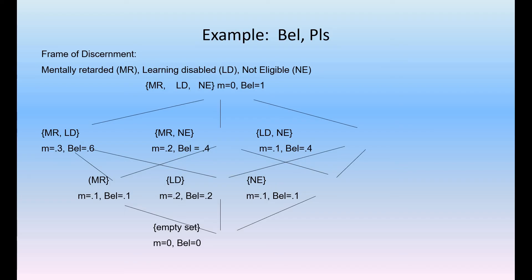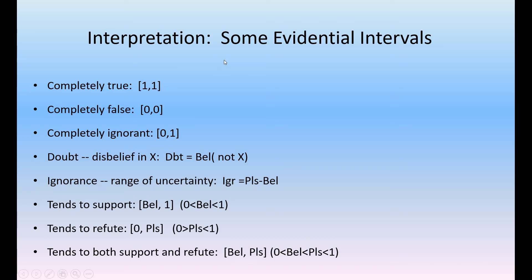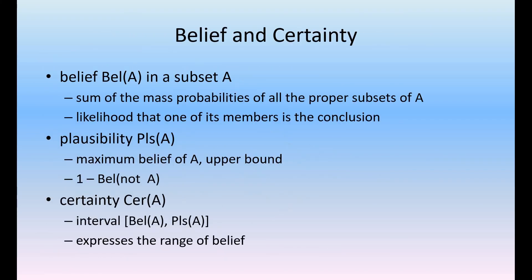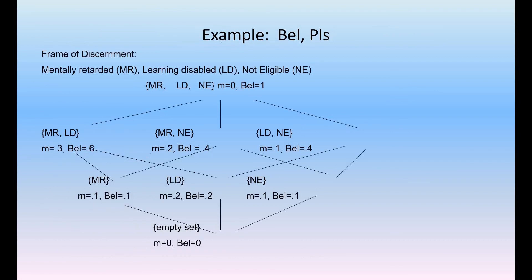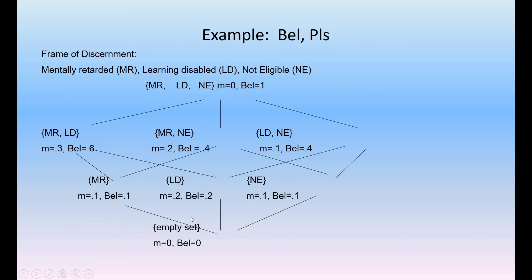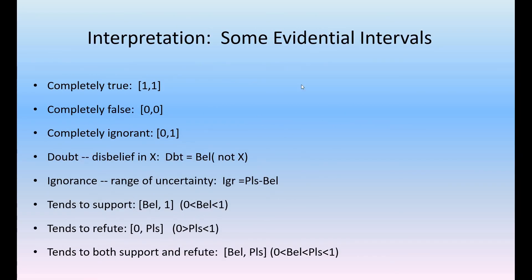Some of the evidential intervals: if the belief and plausibility lies in the range of 1, 1, here we see the certainty can be described as belief and plausibility, the interval in between 0, 1. Some interpretations: if it is in between 0, 1, completely ignorant; if it is 0, 0, completely false; if it is 1, 1, it is completely true.